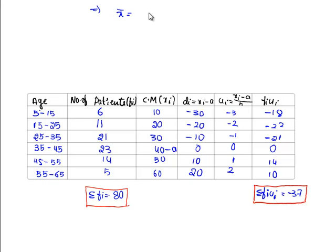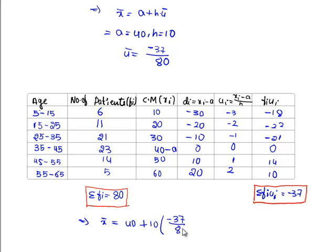x bar equals A plus H into U bar, where A equals 40, H equals 10, and U bar equals minus 37 by 80. Substituting all this in the formula, we get x bar equals 40 plus 10 into minus 37 by 80.